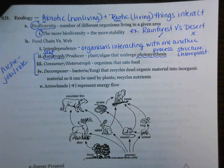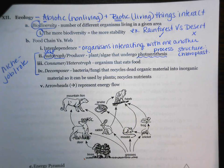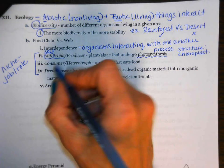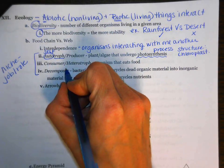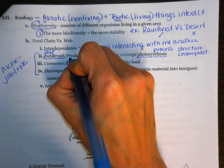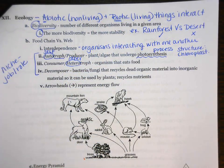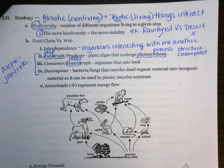The next biological niche is a consumer, or heterotroph. Consumers need to consume or eat food. 'Hetero' means other, and 'troph' means feeder — so we're talking about something that needs to eat other organisms. These are synonyms for one another. Examples include carnivores, omnivores, and herbivores. These organisms cannot make their own food.